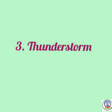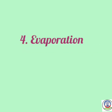Number 3: Thunderstorm. T-H-U-N-D-E-R-S-T-O-R-M. Thunderstorm means: Rainstorm. मतलब, बारिश का तूफान, या आंधी तूफान, या बिजली के साथ वाली आंधी।